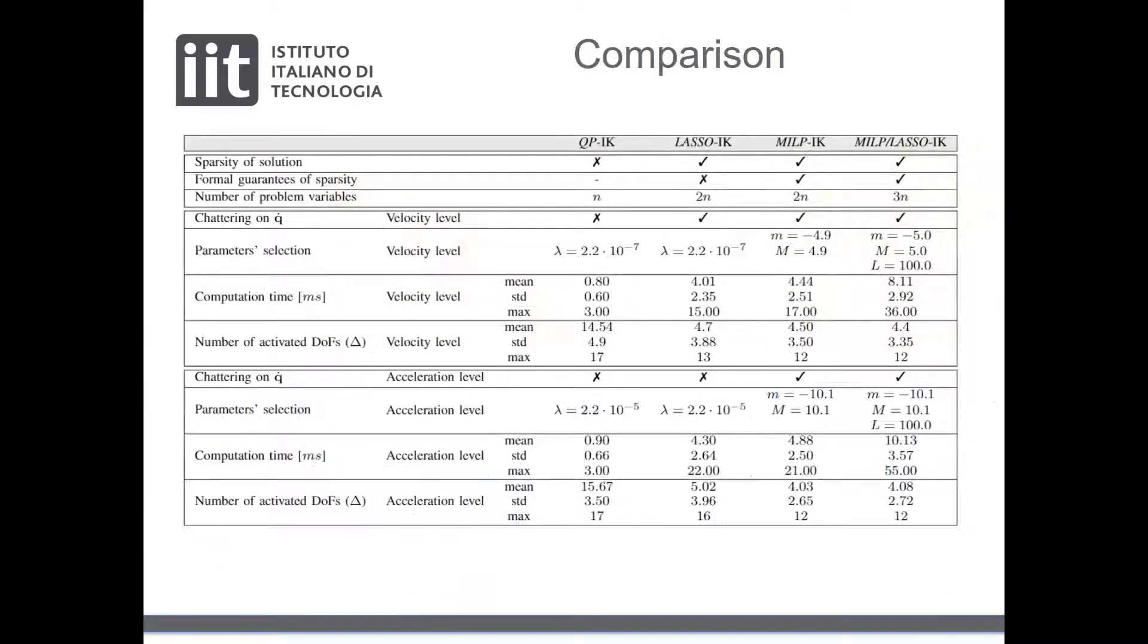The following table recaps the results of the test problems involving the classical hierarchical QP method with postural and the presented methodologies. First, we can see that the classic method is formulated requiring the fewest number of decision variables with respect to the proposed sparse approaches.